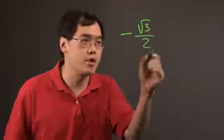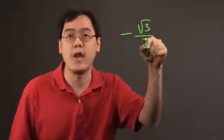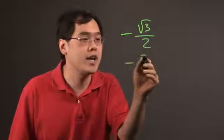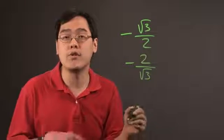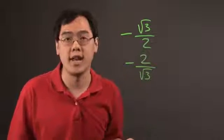Finding the reciprocal is pretty easy because the reciprocal is, as you know, you have to flip the fraction. So this will be negative 2 over square root of 3. Keep in mind that when you're finding the reciprocal of a negative fraction, it's also going to be negative.